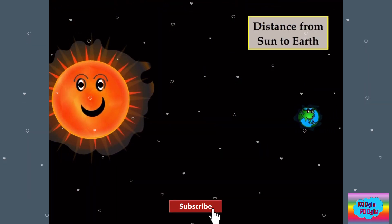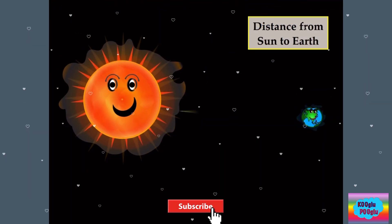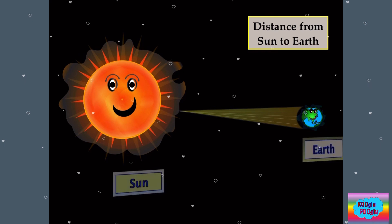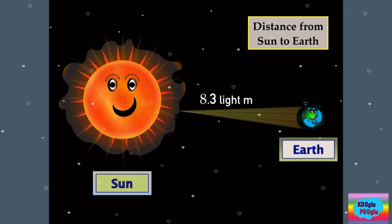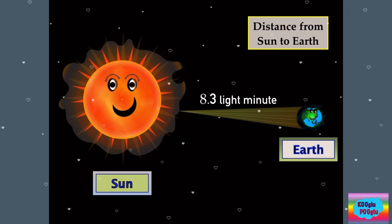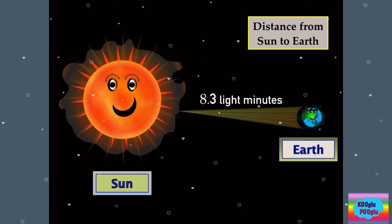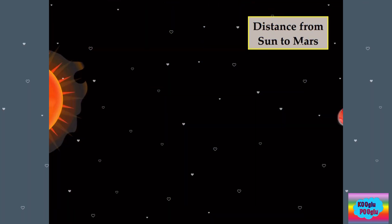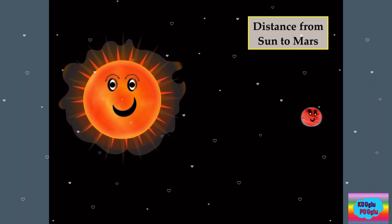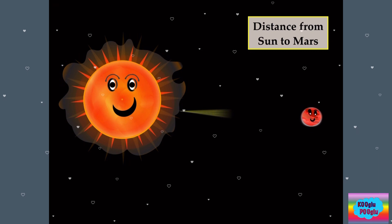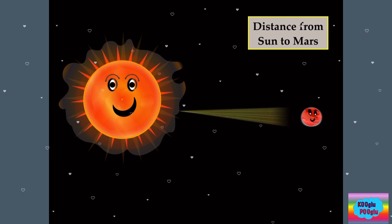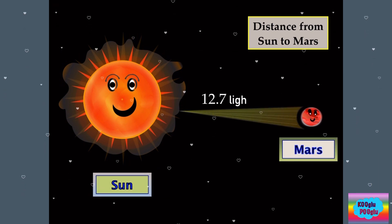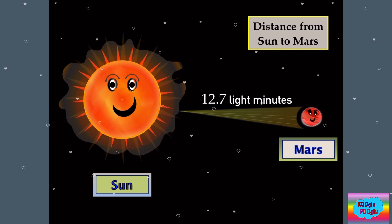Then we got the sun to our home planet Earth — that is 8.3 light minutes away. Then we got Mars, the red planet, and that is 12.7 light minutes.